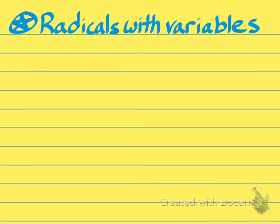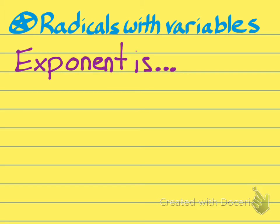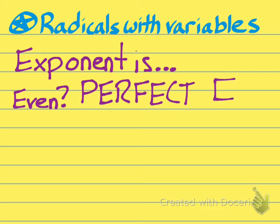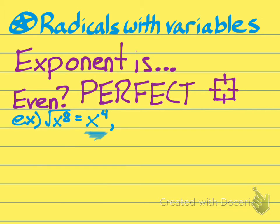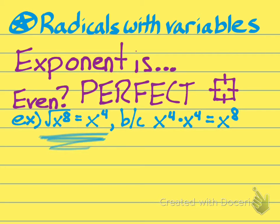Now let's talk about variables, because you are going to get variables within these radicals. When you have an exponent, it's either going to be an even number or an odd number. If you have an even exponent, you're basically getting a perfect square. Look at x to the eighth power — that's a perfect square. When you square root it, you get x to the fourth power. The reason: x to the fourth times x to the fourth equals x to the eighth. You add the two exponents when multiplying variables with the same base. So the square root of x⁸ equals x to the fourth power.